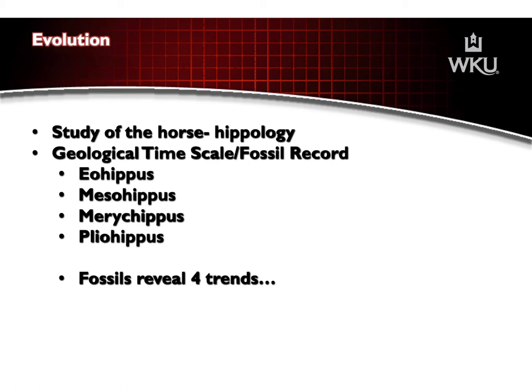Then we have the Mesohippus, from about 35 million years ago when Earth's temperature and climate was changing. The forest thinned and grasses became more prevalent. The Mesohippus was larger than the Eohippus. Its teeth had further evolved and it only had three toes on its front feet, making it better suited to outrun its enemies. As the swamp gave way to soft ground, the lateral supporting toes decreased in size while the middle toe was strengthened, ending in little hooves that still had a pad behind them.